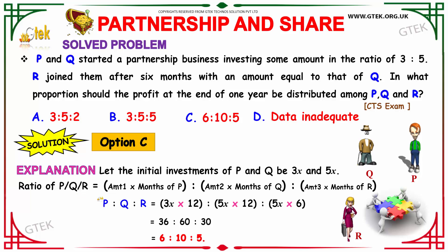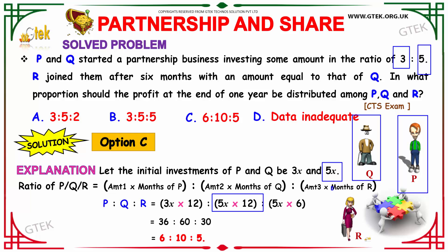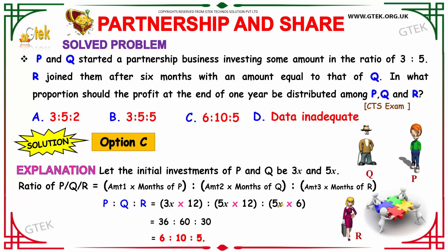The ratio of P and Q can be identified using the proportion values. P invested for 12 months and Q invested for 12 months, while R invested for only 6 months. Taking X as the initial base value, P's amount is 3X, Q's amount is 5X, and R's amount equals Q's amount which is also 5X. So the amounts are 3X, 5X, and 5X.